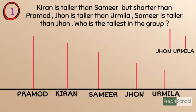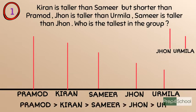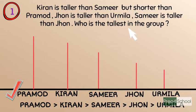Now we get the corresponding height order: Pramod > Kiran > Samir > John > Urmila. The question is who is the tallest in the group. Observing the figure, we can easily say the tallest one among the group is Pramod and the shortest one is Urmila.